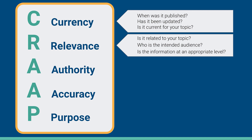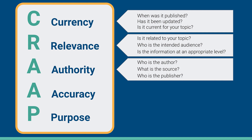For relevance: is it related to your topic? Who's the intended audience — is this for students, for researchers, for the general public? Is the information at an appropriate level? Can you understand it? For authority, you can ask: who is the author? What is the source? And who is the publisher? You can look at these to make sure that these are respected sources of information in the field.